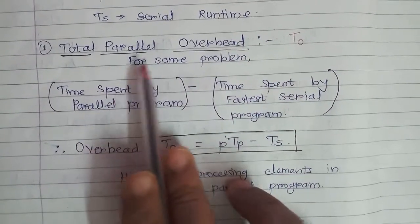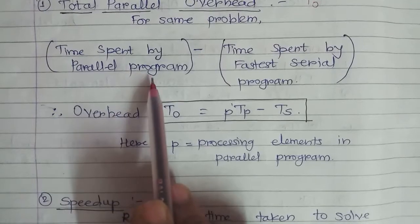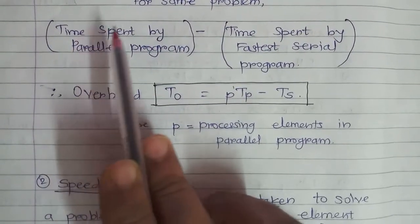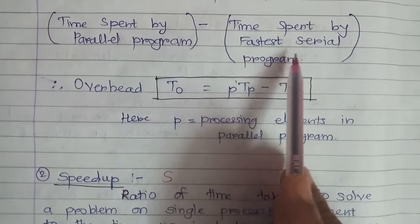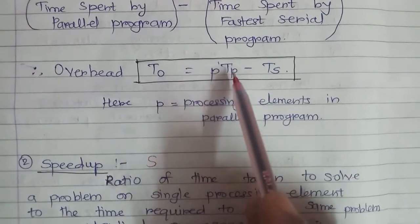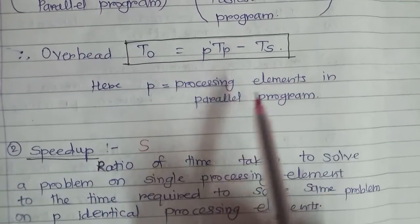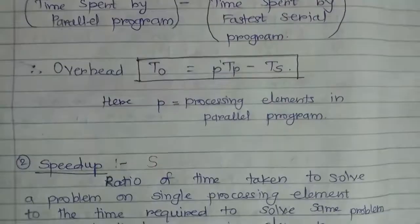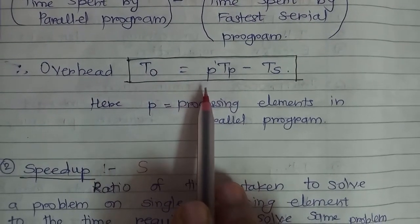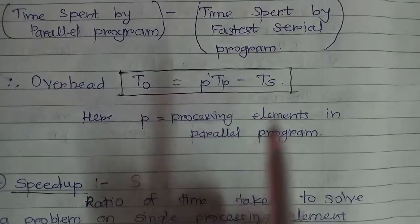One metric is called total parallel overhead, denoted To. If the problem is the same, total parallel overhead is the time spent by the parallel program minus the time spent by the fastest serial algorithm. The excess time that the parallel program has over the best serial algorithm is called overhead. So To is equal to p times Tp minus Ts, where p is the number of processing elements used in the parallel program. Even though many processing elements run simultaneously, we calculate the excess time spent, giving us p times Tp as the parallel time and Ts as the serial time.